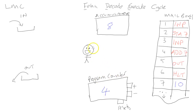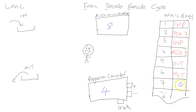The program counter increments to four. He goes to position four and fetches the instruction 'add', which means add whatever is in the accumulator to whatever number is in position seven. He decodes and executes it: he goes to position seven, gets the 10, and adds it to the 8 — giving a total of 18. He then increments the program counter from four to five.